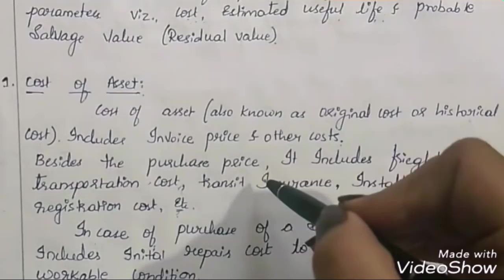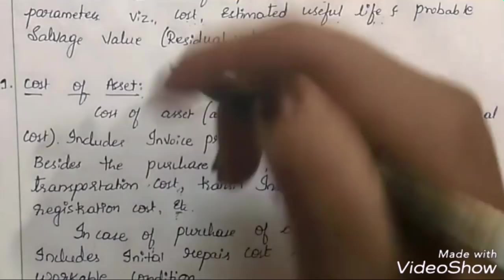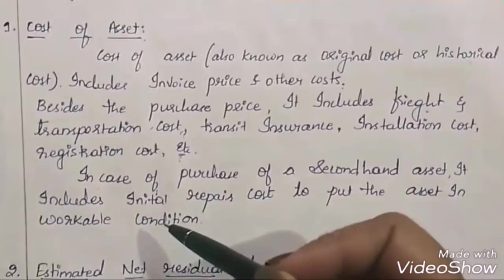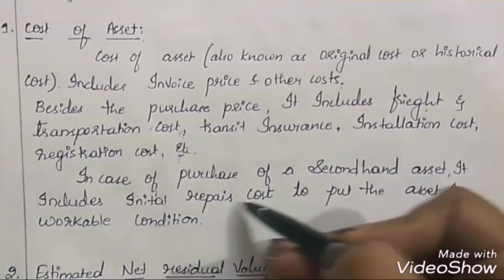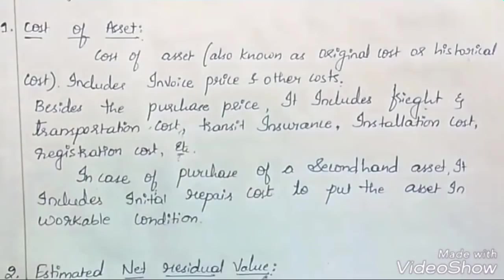If we purchase a second-hand asset, the cost will also include initial repair costs — whatever repairs are necessary for putting that asset back into working condition are also added to the cost of asset.